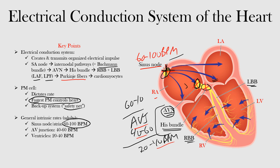To briefly review: the electrical conduction system creates and transmits an organized electrical impulse. It starts in the sinus node, travels through the internodal pathways to the AV node, with the Bachmann bundle serving the left side. From the AV node we have the His bundle, then the right and left bundle branches. The left bundle branch divides into the left anterior fascicle — which innervates the anterior and superior left ventricle — and the left posterior fascicle, which innervates the inferior and posterior aspects. The left anterior fascicle is also called the left anterior superior fascicle. From the fascicles and branches, Purkinje fibers innervate the cardiomyocytes, followed by cell-to-cell depolarization.